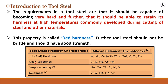The tool steel material must have wear resistance to increase the life of the tool and to maintain the ability to cut other materials. Alloying elements such as vanadium, molybdenum, chromium, and manganese are added for this purpose. Other requirements include deep hardening, toughness, and corrosion resistance.